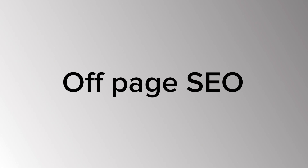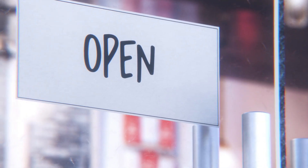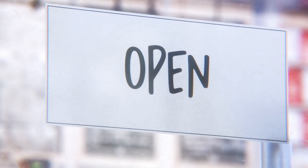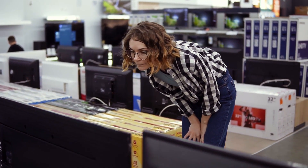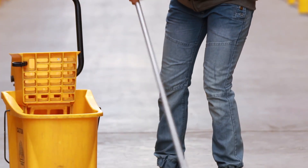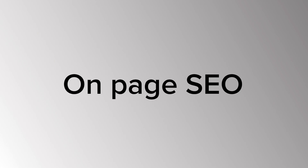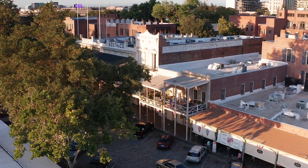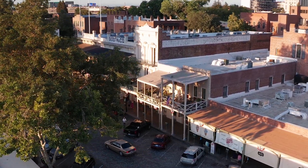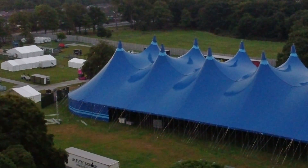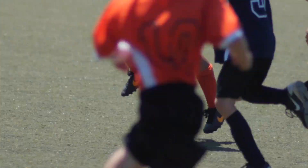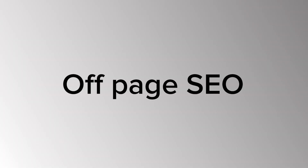Off-page SEO can be tricky to understand, so let me offer an analogy. If you opened an electronics store in your local area, you'd want to stock the best goods, keep the shop clean, have trained staff, offer competitive pricing and great customer service. That's the equivalent of on-page SEO — things you do inside your business. Off-page SEO is everything you can do outside your business location. You'd want to be part of community events, sponsor sports leagues, and get coverage in local media. Basically, off-page SEO is all about discoverability and reputation.